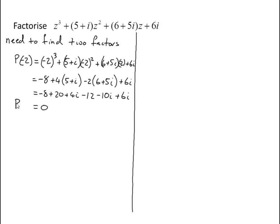So if the polynomial at minus 2 equals 0, that tells me z plus 2 is a factor.